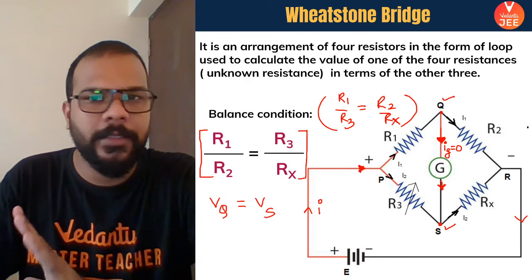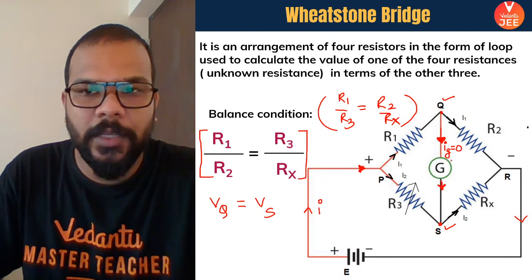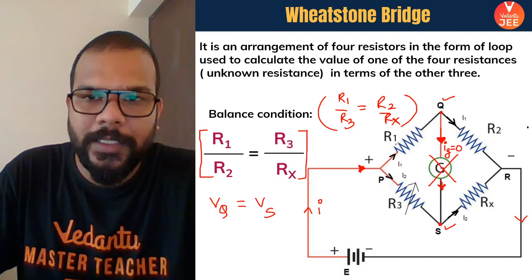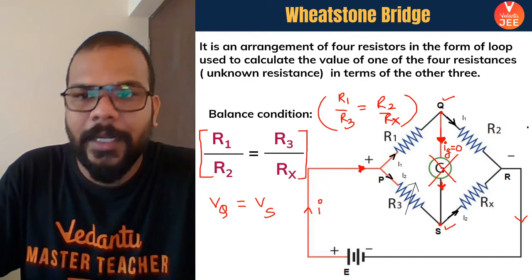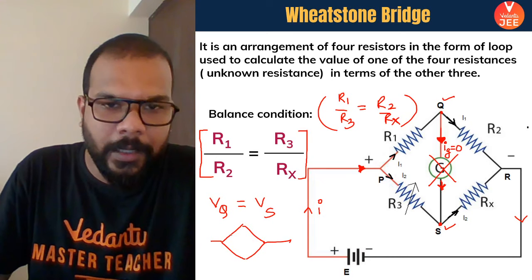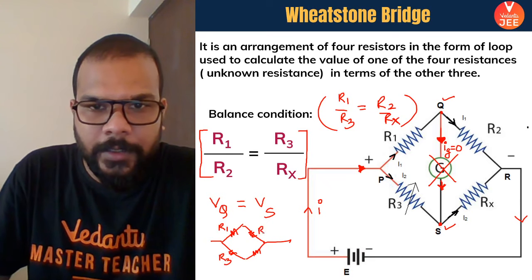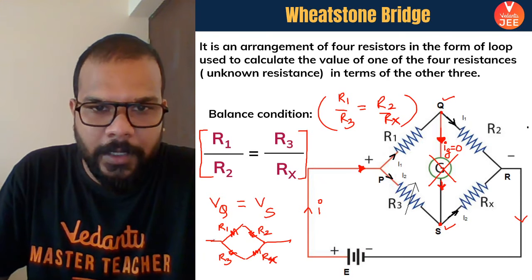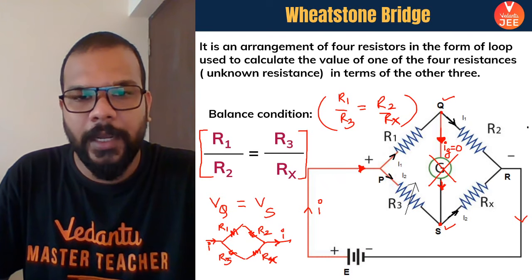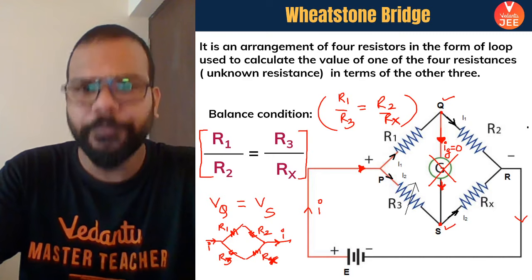Since there's no current in that bridge branch, you can remove it — no electricity is consumed there. After removing it, R1 and R2 are in series, and R3 and Rx are in series. The equivalent circuit then becomes two series combinations connected in parallel, which simplifies the circuit significantly.